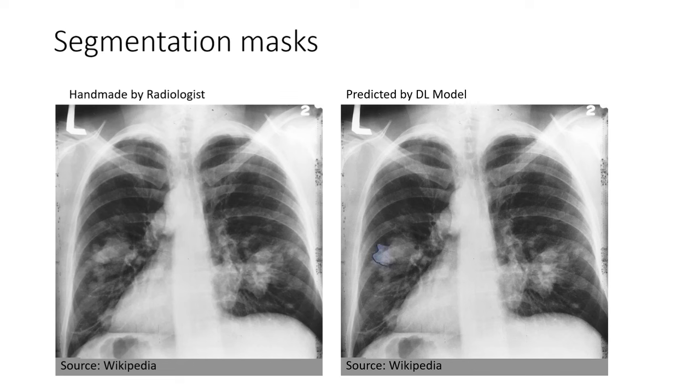Suppose I have a deep learning model which predicts on this X-ray that the cancer region is of this shape, but the radiologist creates this shape for the area of tumor. So the problem is: how do we compare the shape that is created by the radiologist versus the shape which is created by a deep learning model?